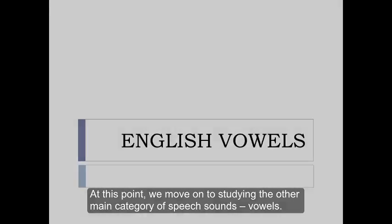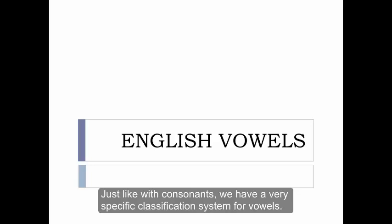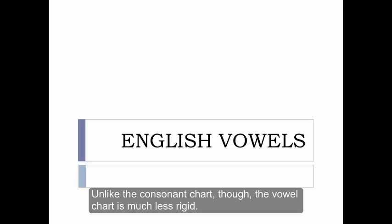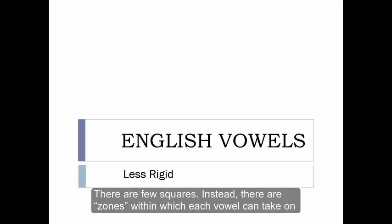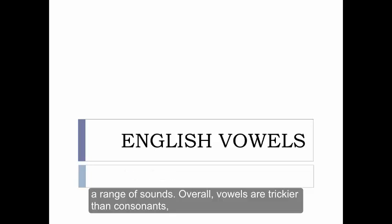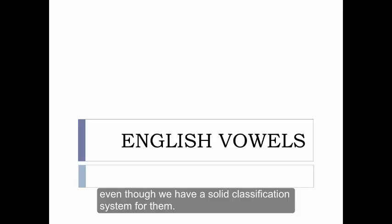At this point, we'll move on to studying the other main category of speech sounds: vowels. Just like with consonants, we have a very specific classification system for vowels. Unlike the consonant chart, though, the vowel chart is much less rigid. There are few squares. Instead, there are zones within which each vowel can take on a range of sounds. Overall, vowels are trickier than consonants, even though we have a solid classification system for them.